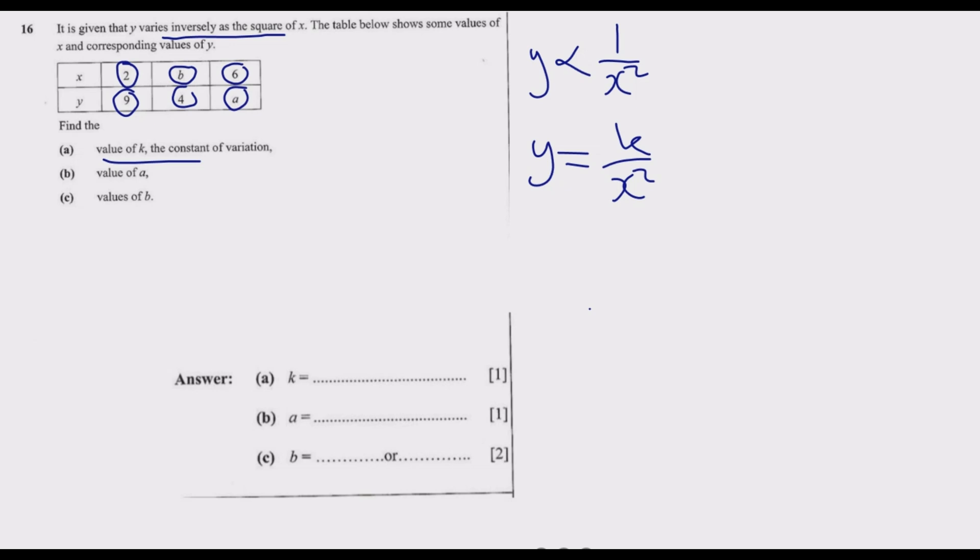We need to find the constant of variation. Let us substitute: 9 is equal to K over X squared. What is X? It's 2. So we have 9 is equal to K over 4, which is 2 times 2. Cross multiply: 4 times 9 equals 36. So the value of K is 36.